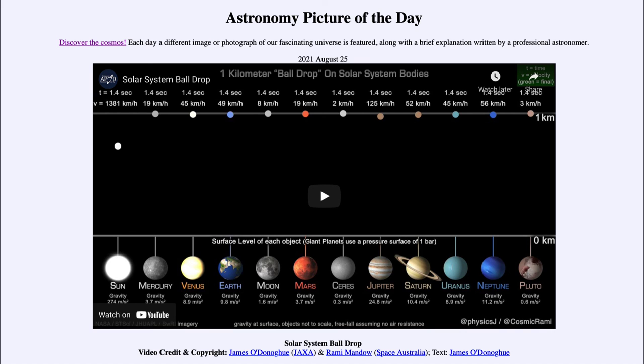So that was our picture of the day for August the 25th of 2021. It was titled Solar System Ball Drop. We'll be back again tomorrow for the next picture.